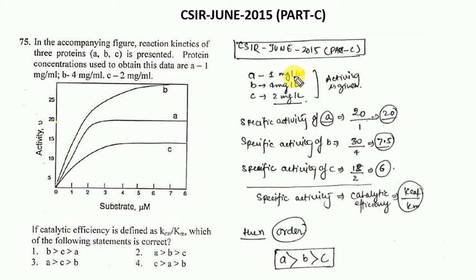For C, the specific activity: C's maximum activity, if you see the graph, the peak point is around 12 or 14. If we take 12, 12 divided by 2 equals 6. So the specific activities are: A is 20, B is 7.5, and C is 6. Now arrange them in order: A will be more, then B, then C.